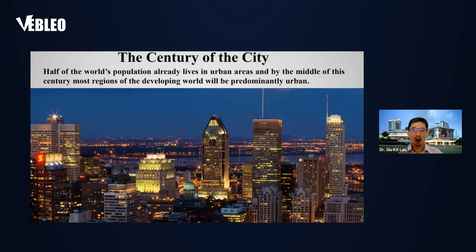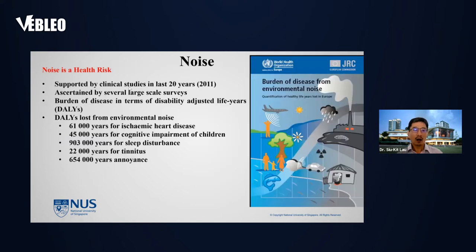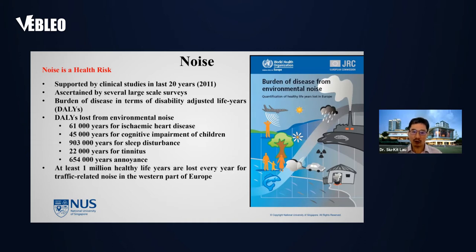We are in the century of the city. Half of the world population already lives in urban areas, and by the middle of this century, most regions of the developing world will be predominantly urban. There are some challenges in urban environments. Besides density and urban storage, pollution is a major concern, which includes air pollution, natural habitat, and noise. Noise is an important issue for our health. According to WHO reports supported by clinical studies, there are significant years of life lost from environmental noise. At least one million healthy life years are lost every year from traffic-related noise in the western part of Europe, making noise the second most important environmental stressor of death and disability in western Europe.